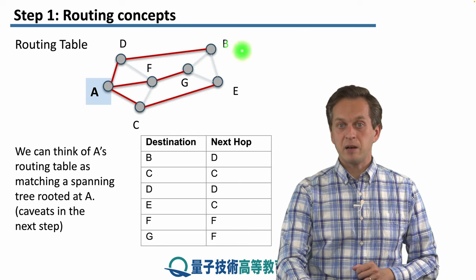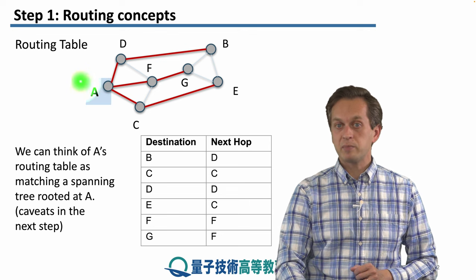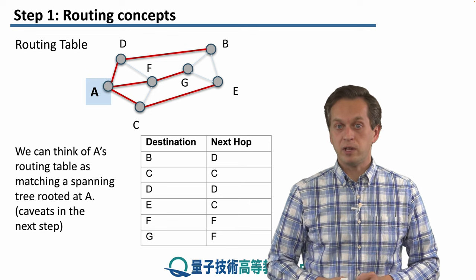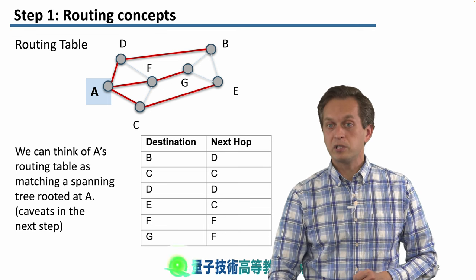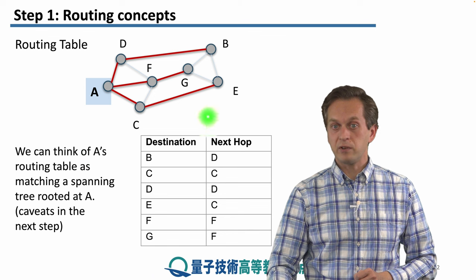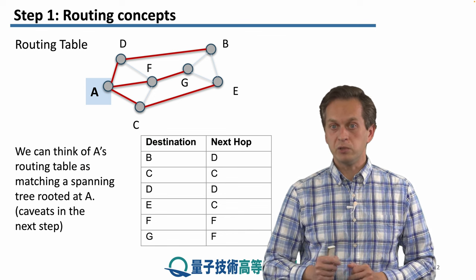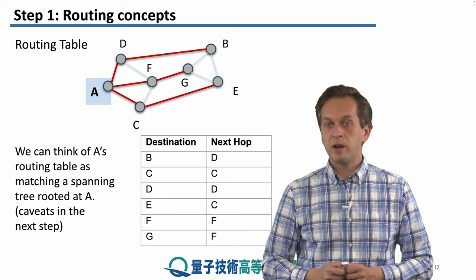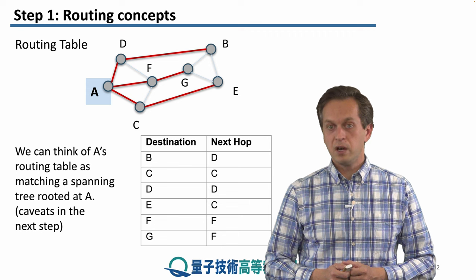Also, as an example of what a routing table might look like, we go back to our network and a spanning tree that's rooted at the node A. And a routing table has the list of all reachable destinations that were discovered in the network. Here it's all the other nodes, B to G. And where the packet needs to be forwarded to next in order to reach the destination.